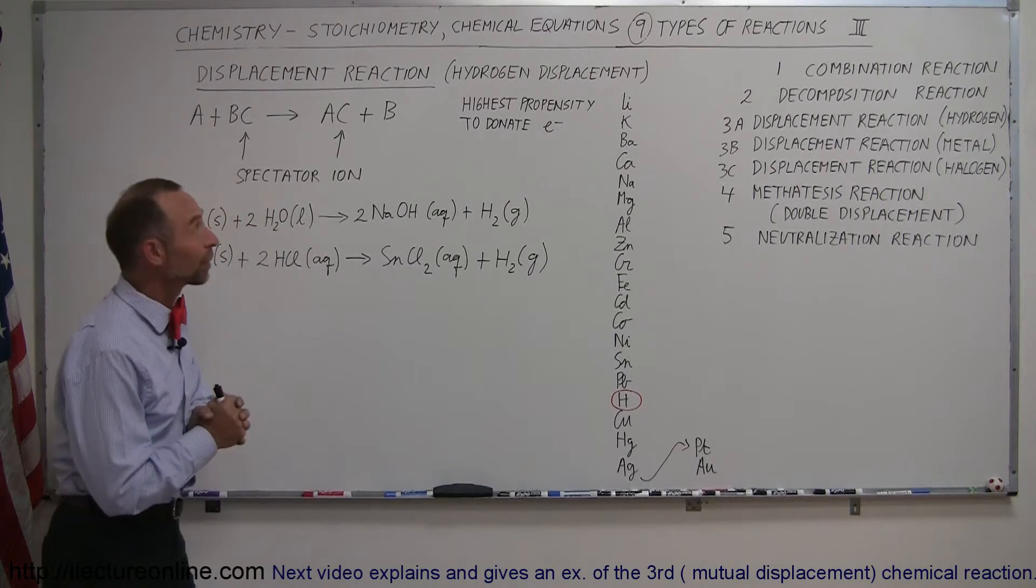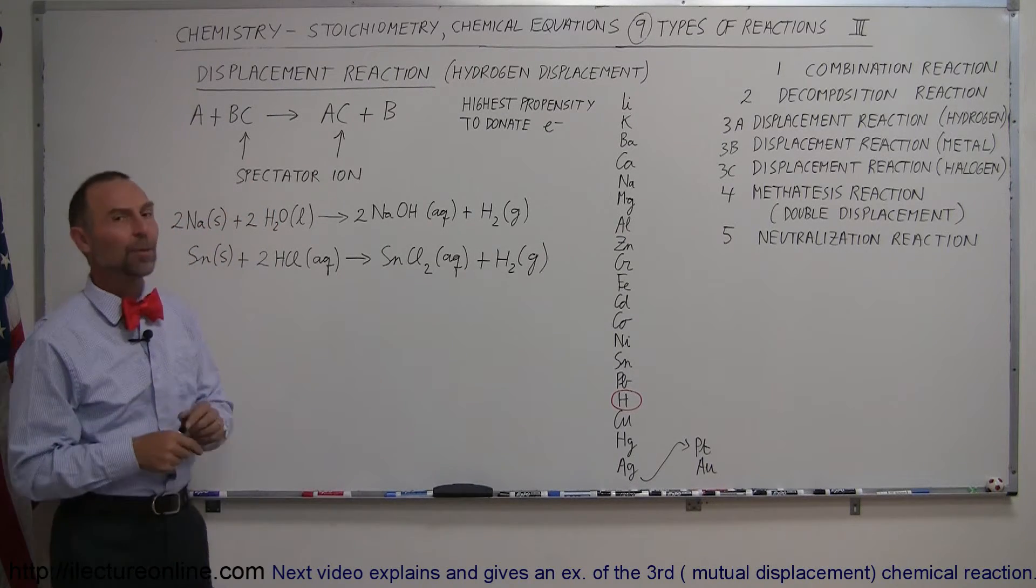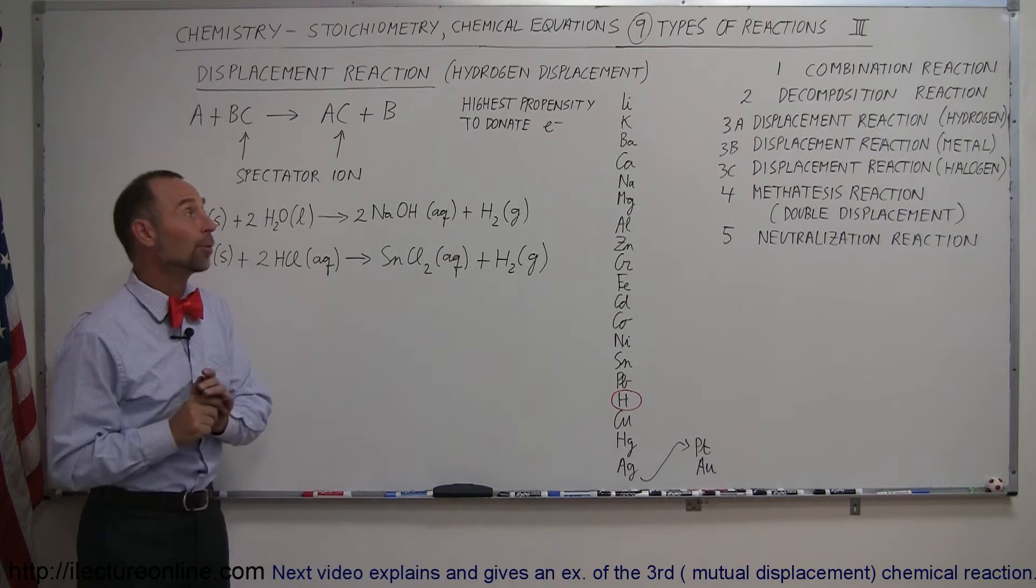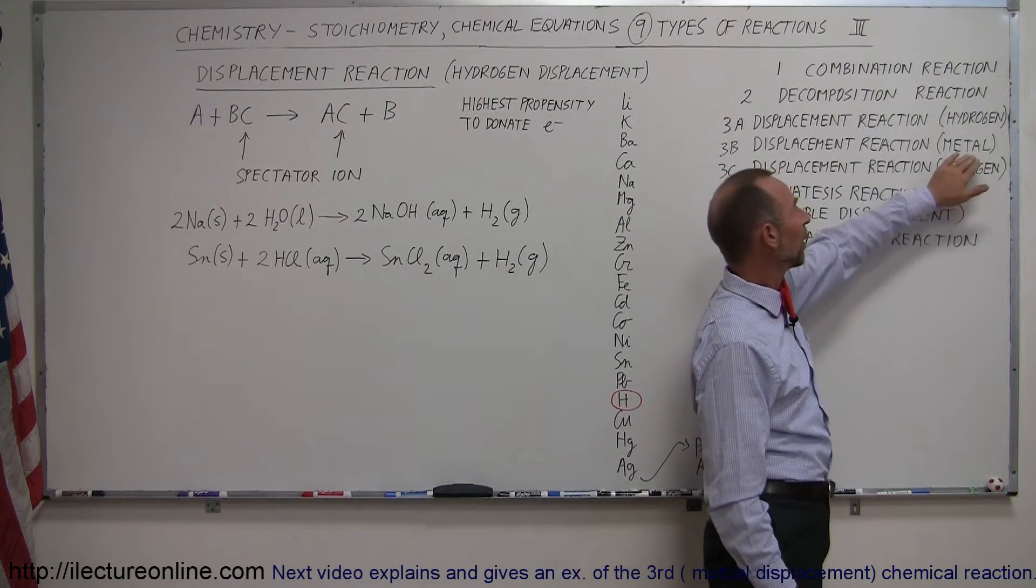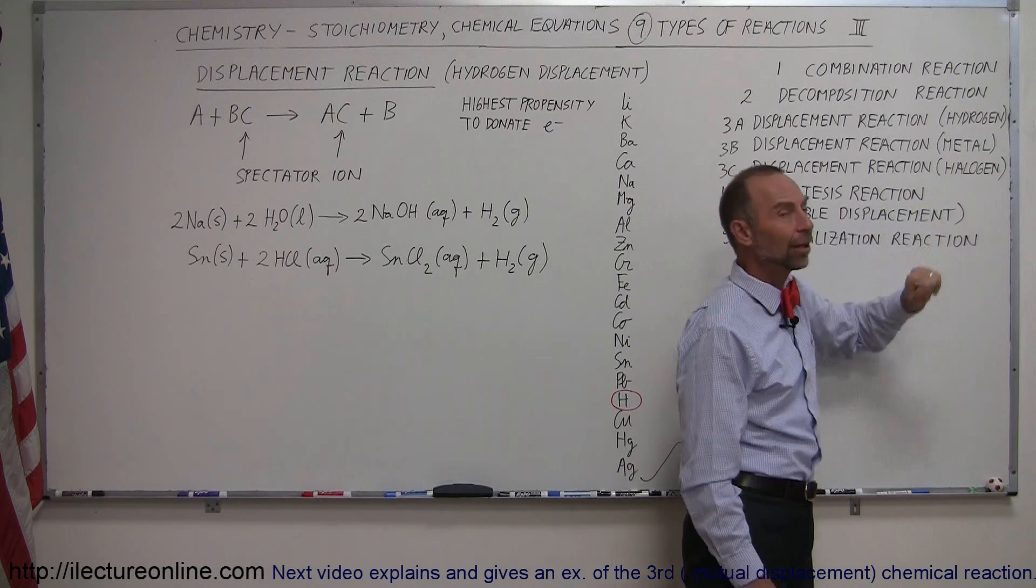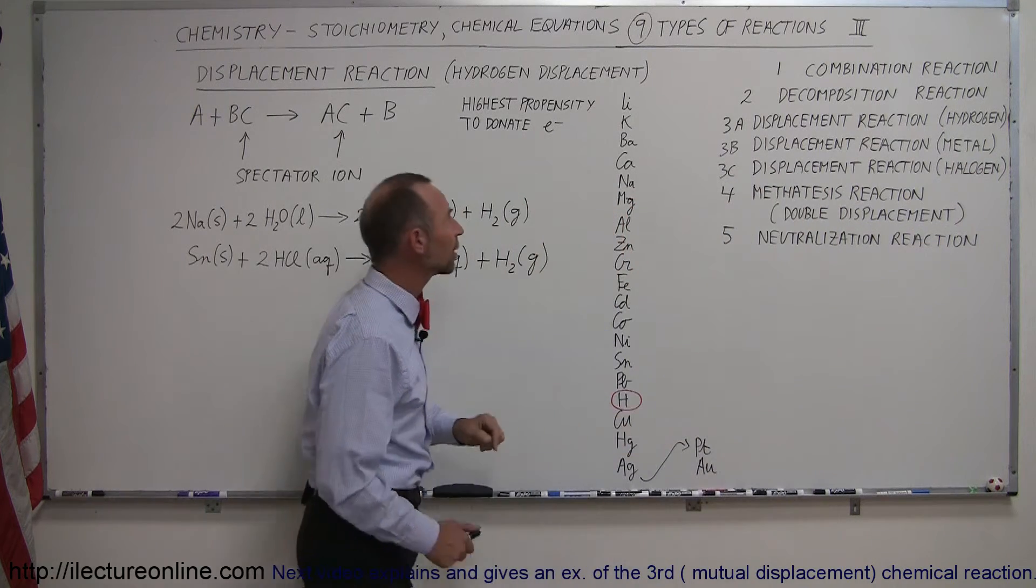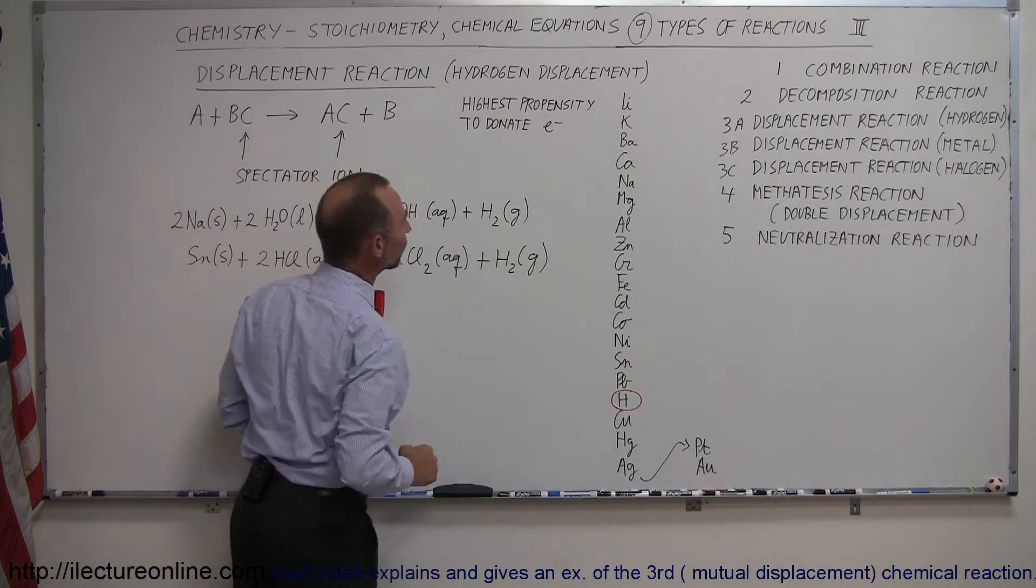And here we've come to our third type of chemical reaction called the displacement reaction. Now there's different kinds of displacement reactions as we've seen before. We have what we call hydrogen displacement, metal displacement, and the halogen displacement. So this video here will be dealing with what we call hydrogen displacement.